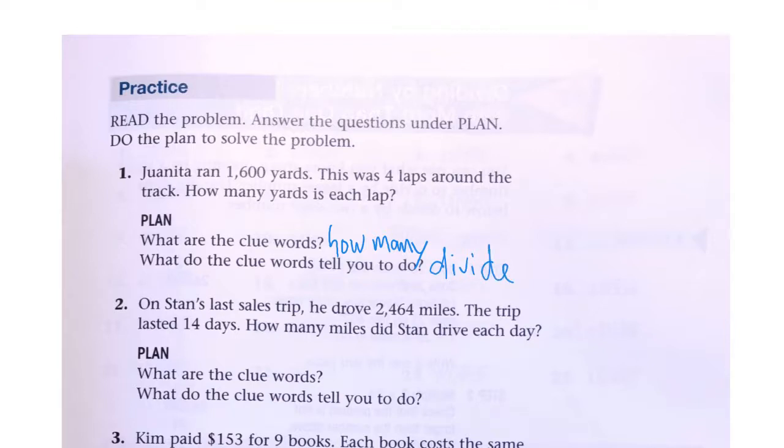Then let's do the plan. We had sixteen hundred yards and we're dividing by four laps. Four can't go into one because one is less than four, but four can go into sixteen. So four times four is sixteen. Four can't go into zero. Zero fours go into zero. So how many yards is each lap? Four hundred yards.